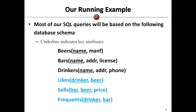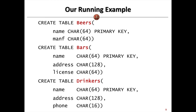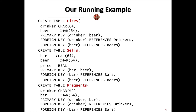We can also translate the relationships into relations: Likes between drinker and beer; Sells between bar and beer with price; and Frequents between drinker and bar. Based on these relations, we can create tables in our database system. For example, a table for Beers with name (char 64) and manufacturer (char 64), where name is the primary key. Similarly, we create tables for Bars, Drinkers, Likes, Sells, and Frequents.